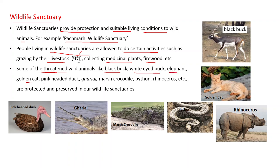Some of the threatened wild animals like black buck, white-eyed buck, elephant, golden cat, pink-headed duck, gharial, marsh crocodile, python, rhinoceros, etc. are protected and preserved in our wildlife sanctuaries. With the help of a diagram you can identify these animals: black buck, golden cat, pink-headed duck, gharial, marsh crocodile, python, and rhinoceros.